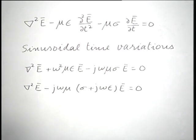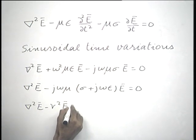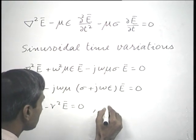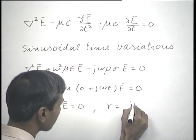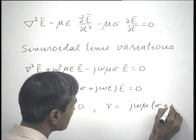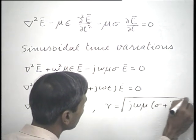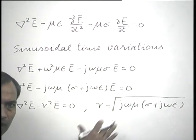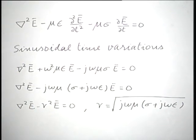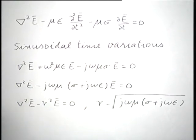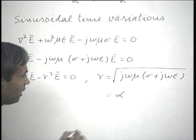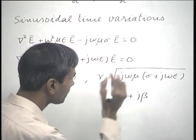Introducing a new symbol, we write del²E minus γ²E = 0, where γ = √[jωμ(σ + jωε)]. Here γ is a complex quantity involving the frequency and the characteristics of the medium. In general it will have a real part α and an imaginary part β.